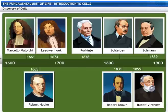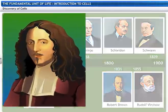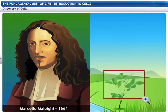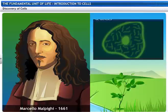The discovery of cells dates back to the 17th century and is associated with the invention of microscopes. Marcello Malpighi, a microscopist, proposed that plants are made of tiny structural units called utricles.